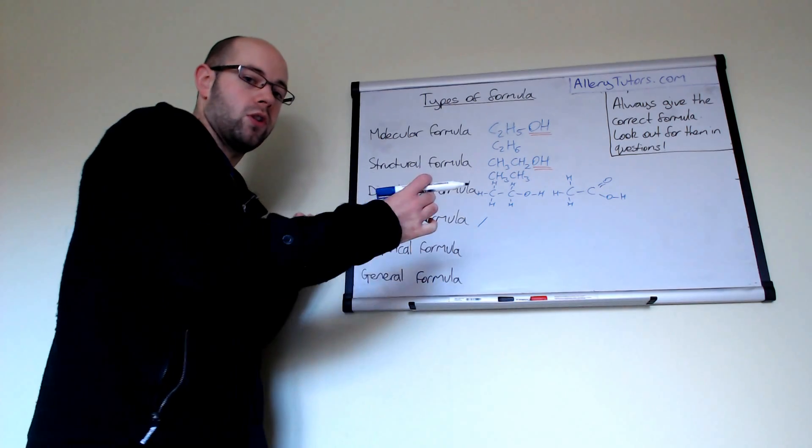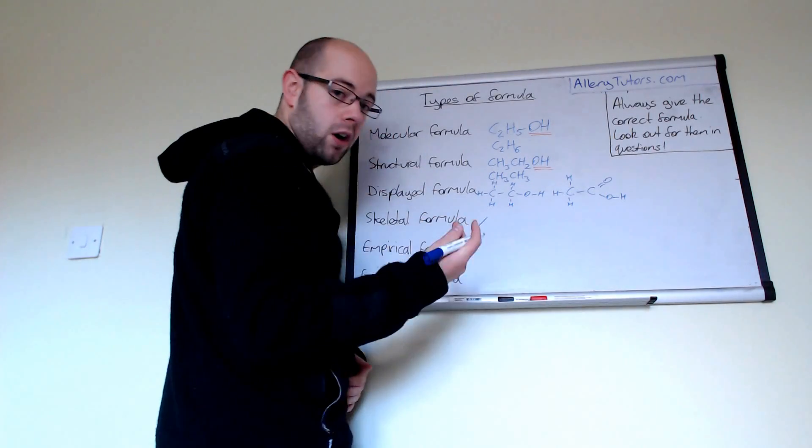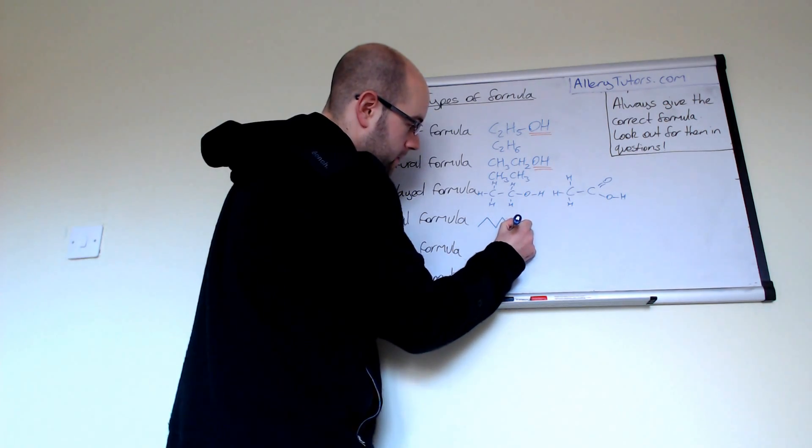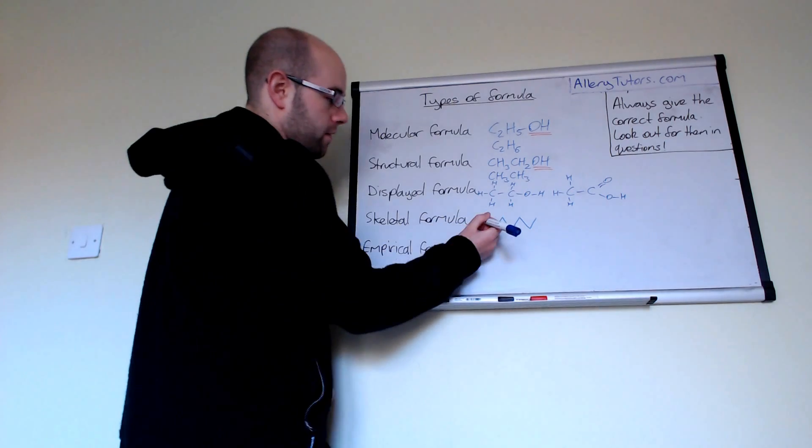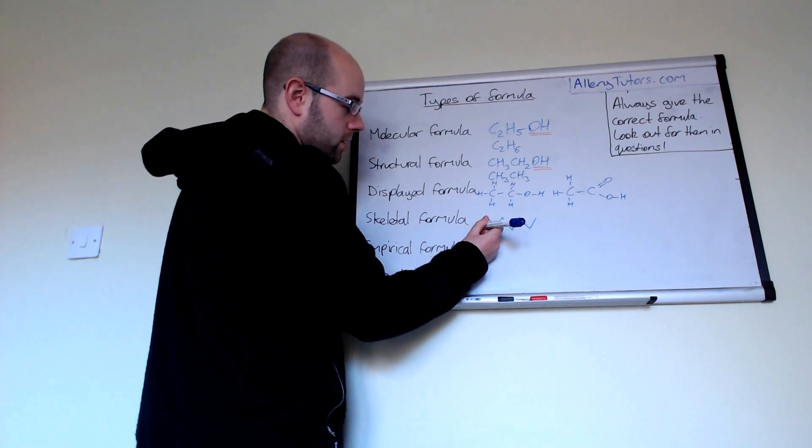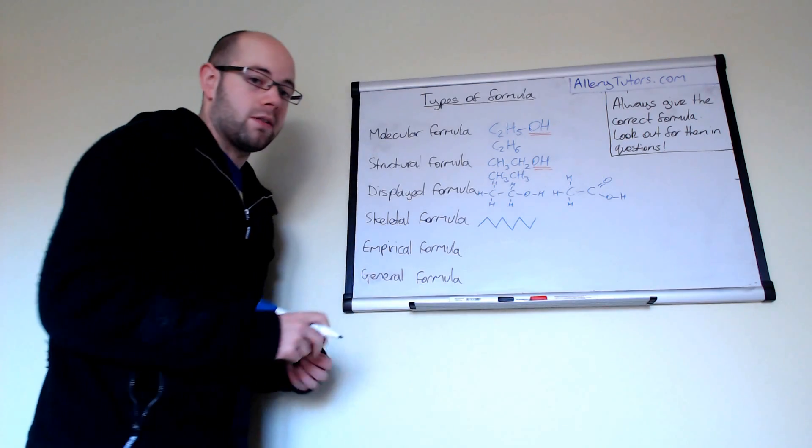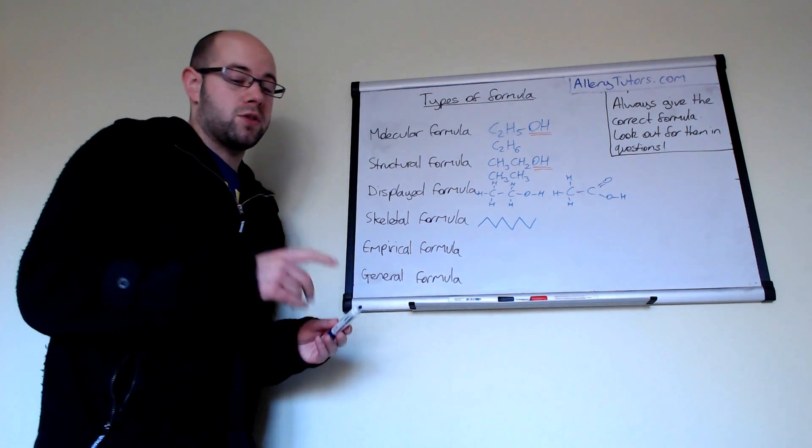Now obviously that looks a bit weird because it's just a line but skeletal formula is coming into their own when you start to draw long hydrocarbon chains. For example you might have if it was octane you'd have one two three four five six seven eight points on there.